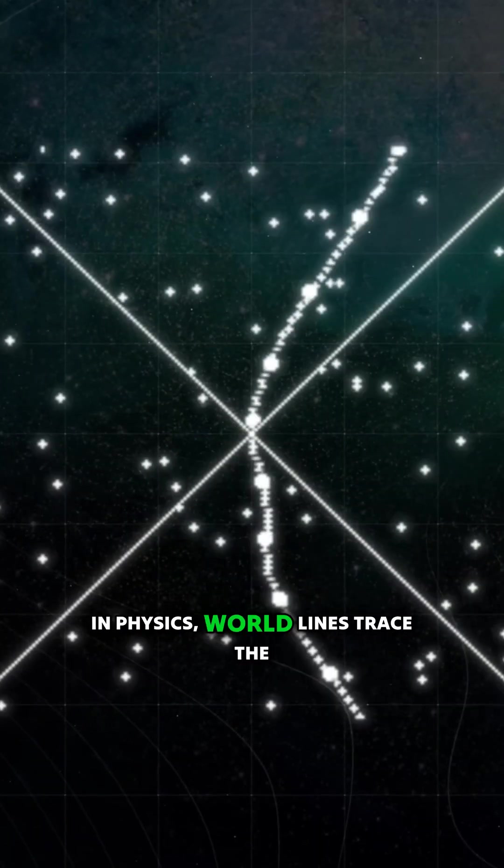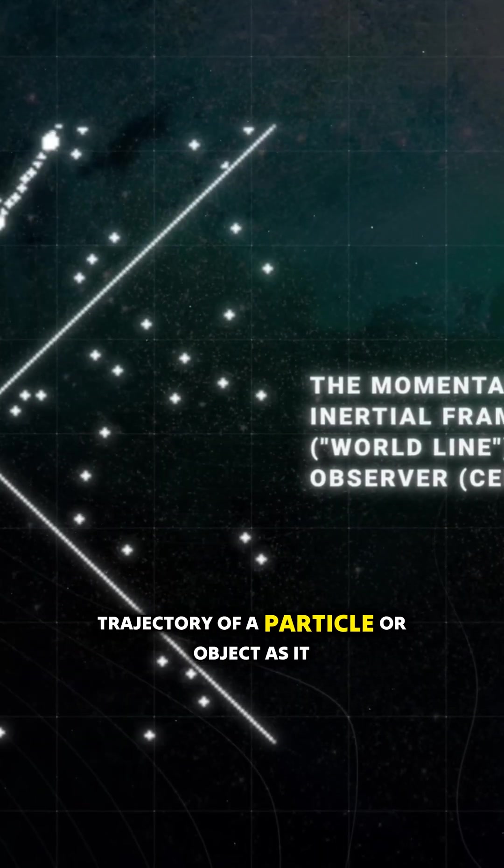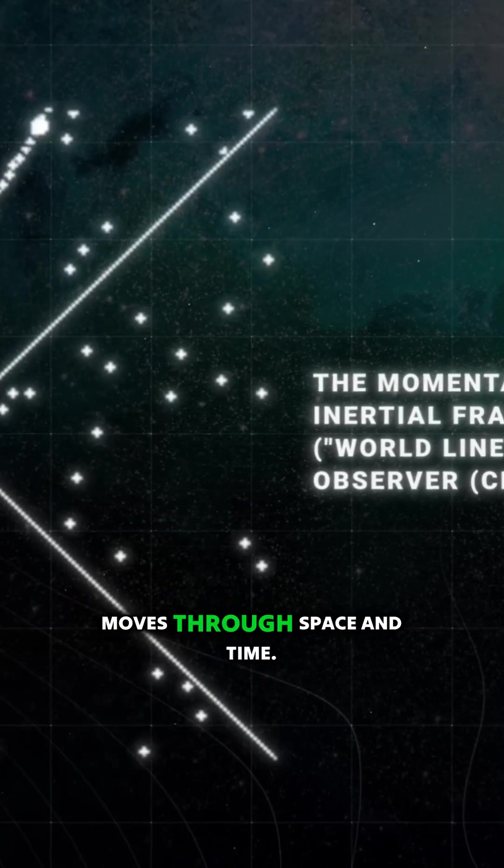In physics, world lines trace the trajectory of a particle or object as it moves through space and time.